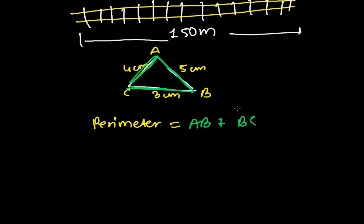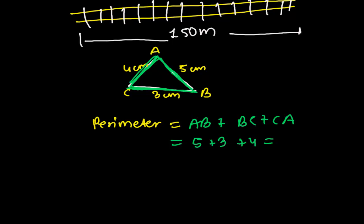So here AB is 5, BC is 3, and CA is 4. That gives us 5 plus 3 is 8, and 8 plus 4 is 12. So 12 centimeters is the perimeter of this triangle. For any kind of triangle, we don't care about the shape — just get the sum of all sides. That is your perimeter.